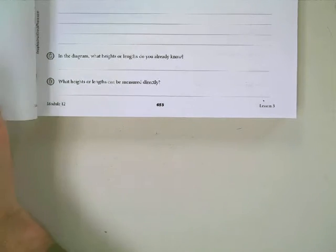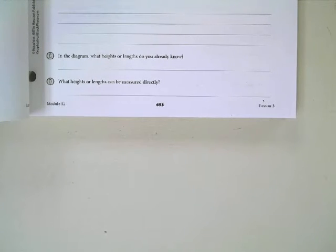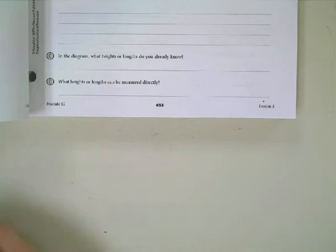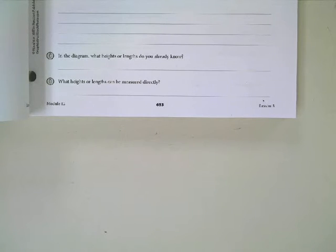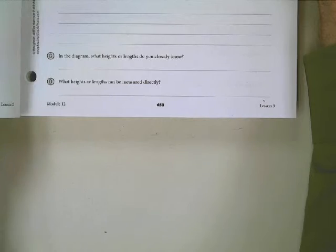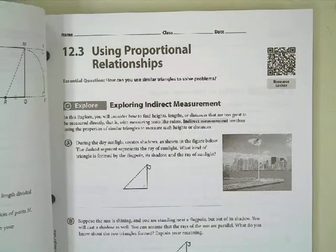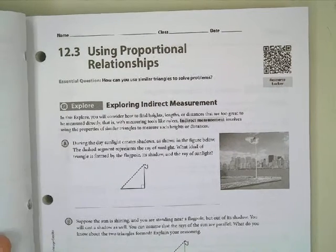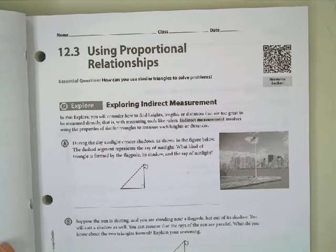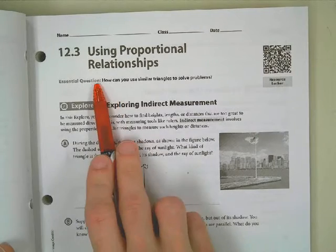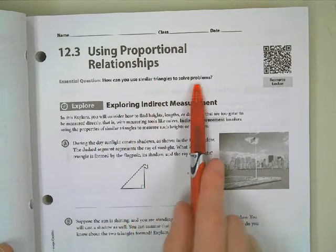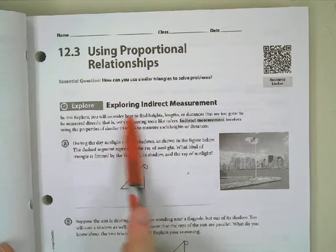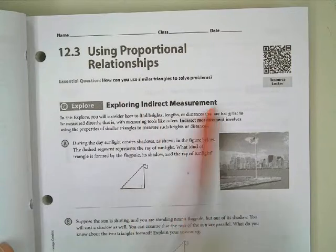Page 653, right there. What we're going to look at today on page 653 is we're going to use proportional relationships. That's what we've been doing this whole time — why is this special? Well, we're going to apply them in situations where we maybe can't measure certain things. So the essential question is: how can we use similar triangles to solve problems? In this explore, we're going to introduce ourselves to the idea of indirect measurement.